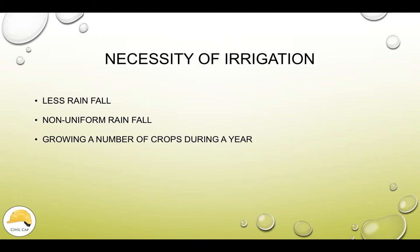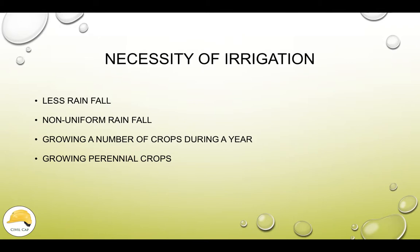In winter season, we will be growing a number of crops. We will help the irrigation system. One point is growing perennial crops. Perennial crops are crops like berries. The yield is the same throughout the year. In winter season, we will help the irrigation system.